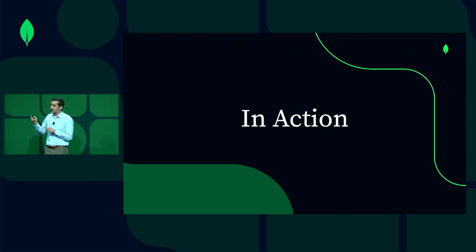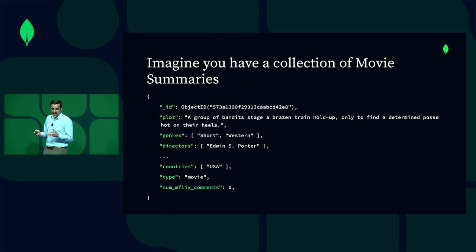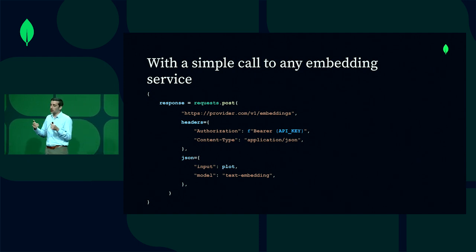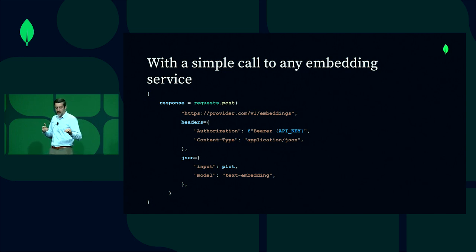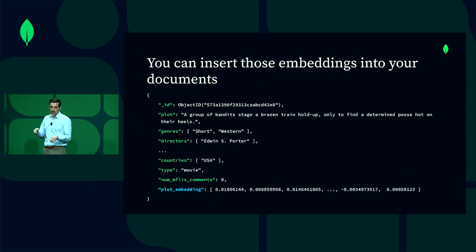Now to dive into a demo through slides. The way this works inside of Atlas is you would have a document such as a movie inside of a movies collection. You would take that document which has genre, directors, and a plot, and take the plot and send it through an embedding service — usually some API. This can all be done using Atlas triggers inside of the platform. You pass in the plot as the input field — just the string — and the result from this, based on the model you choose, is going to be an embedding that you then tuck back inside of your documents. So you have 'plot' and then 'plot underscore embedding,' which is your series of floats representing your vector.